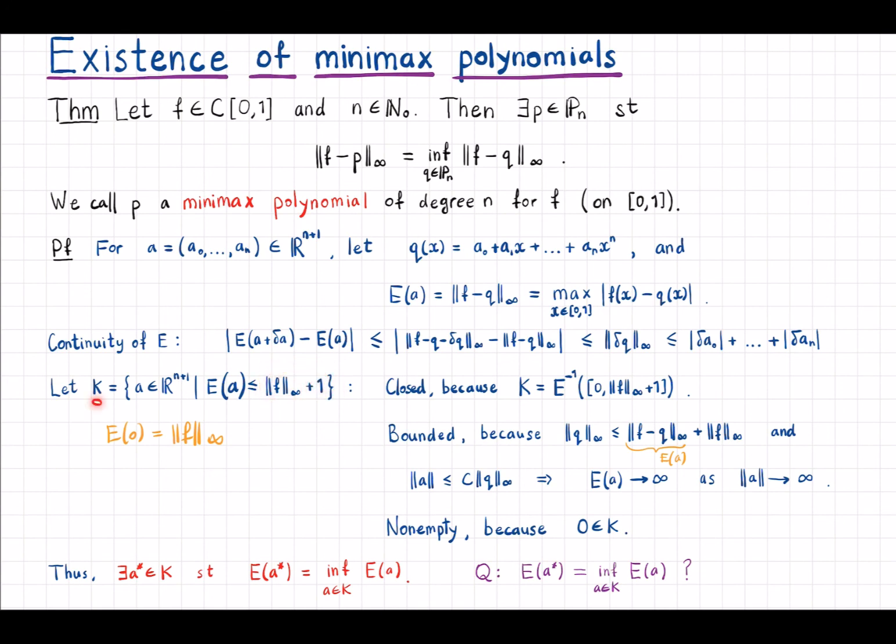So K is closed, bounded, and non-empty. So by Weierstrass theorem, there exists a point a star in K such that E evaluated at a star is equal to the infimum of E over K. So basically that means this infimum is actually a minimum.